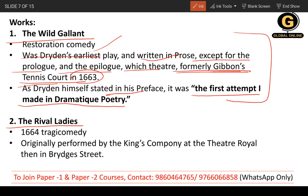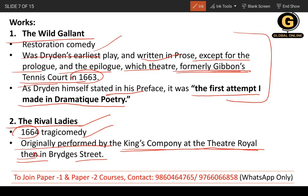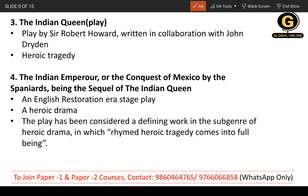The next work is 'The Rival Ladies,' a tragicomedy. It was a 1664 work originally performed by the King's Company at the Theatre Royal in Brydges Street.